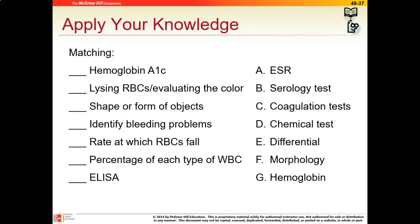Let's do a quick apply-your-knowledge review. The hemoglobin A1c is a type of chemical test. Lysing RBCs and evaluating the color is what we do with hemoglobin. The shape or form of objects — that word is morphology. Identifying bleeding problems is done with coagulation tests. The rate at which RBCs fall is the ESR, or sed rate, or erythrocyte sedimentation rate. The percentage of each type of WBCs is a differential. And an ELISA test is an example of a serologic test.